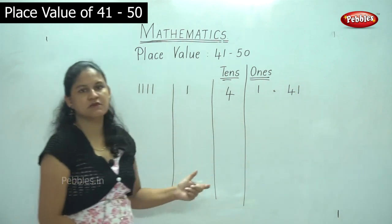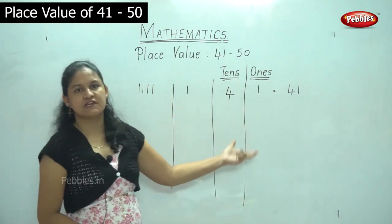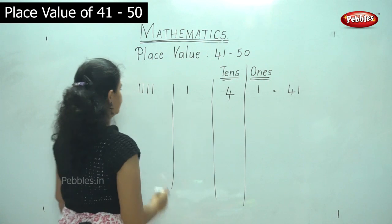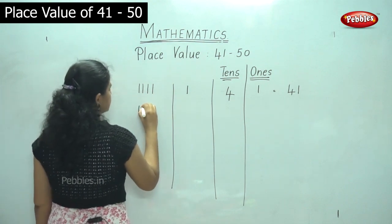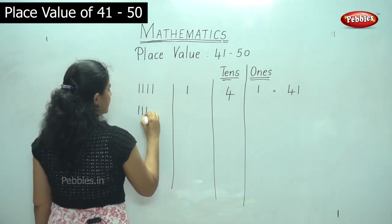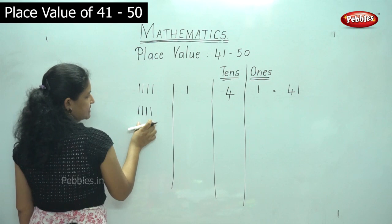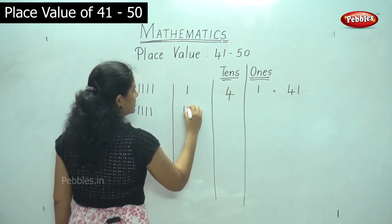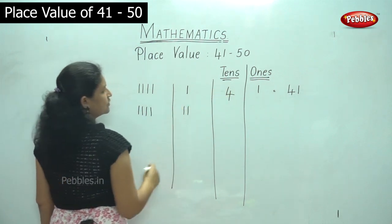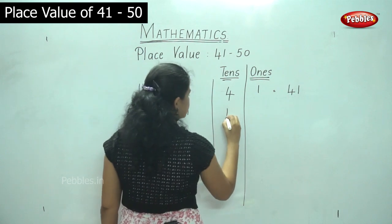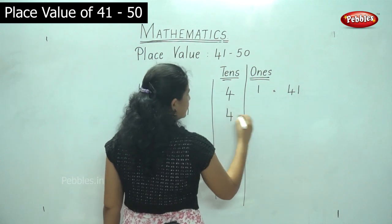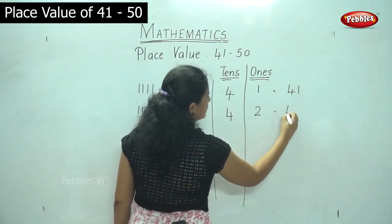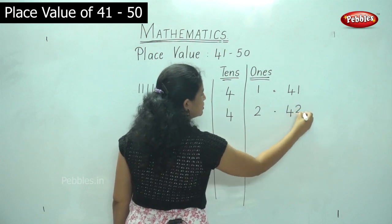Next I have 1, 2, 3, 4 — 4 tens — and in the ones place I have 2. So 4 tens and 2 ones gives me the number 42.